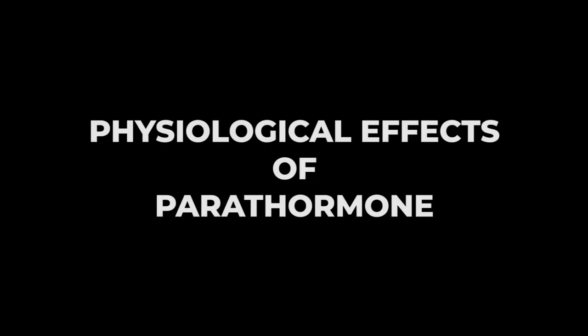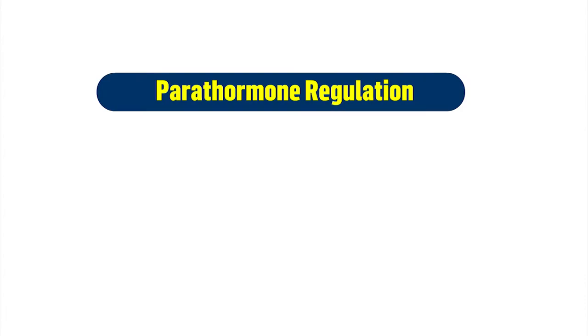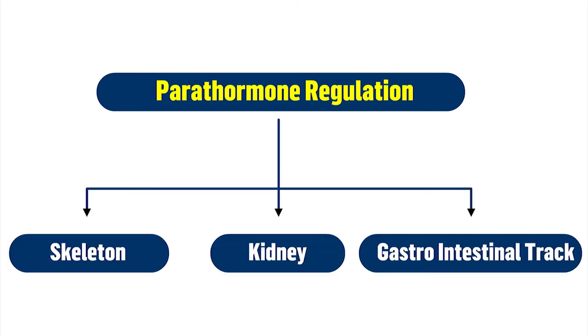What are the physiological effects of parathormone? Parathormone regulates the skeleton, kidney, and gastrointestinal tracts.